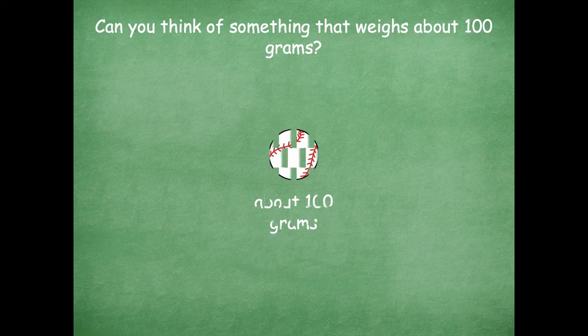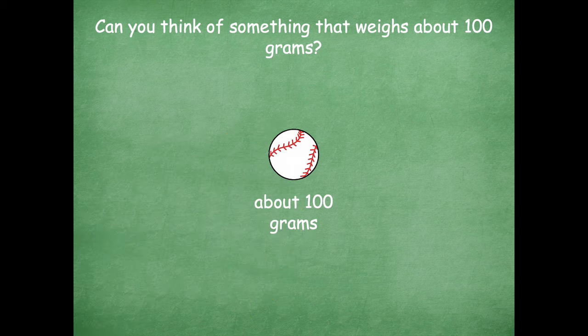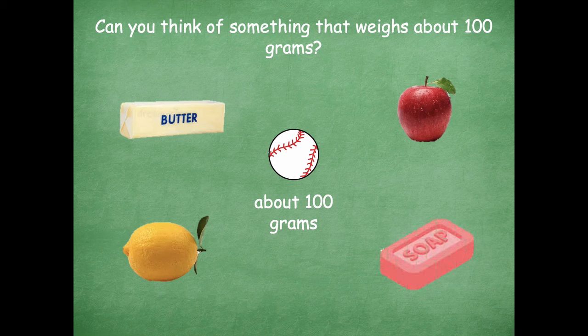Now can you think of something that weighs about 100 grams — about the weight of a baseball? Pause the video, think about that, then click play when you're ready to go over it together. Here are some things I came up with: a stick of butter, a lemon, an apple, maybe a bar of soap. Those are all things I personally use on a regular basis, so it's easy for me to think about their weight when estimating.